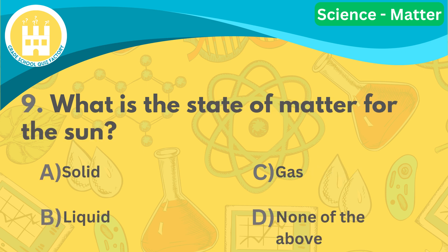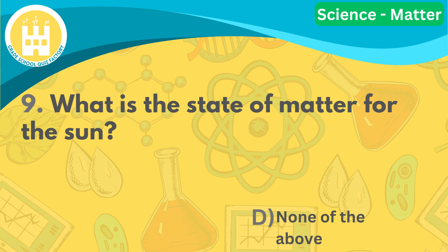Moving on to number nine, what is the state of matter for the sun? The correct answer is letter D, none of the above. The sun is a huge ball of hot plasma, which is a different state of matter.